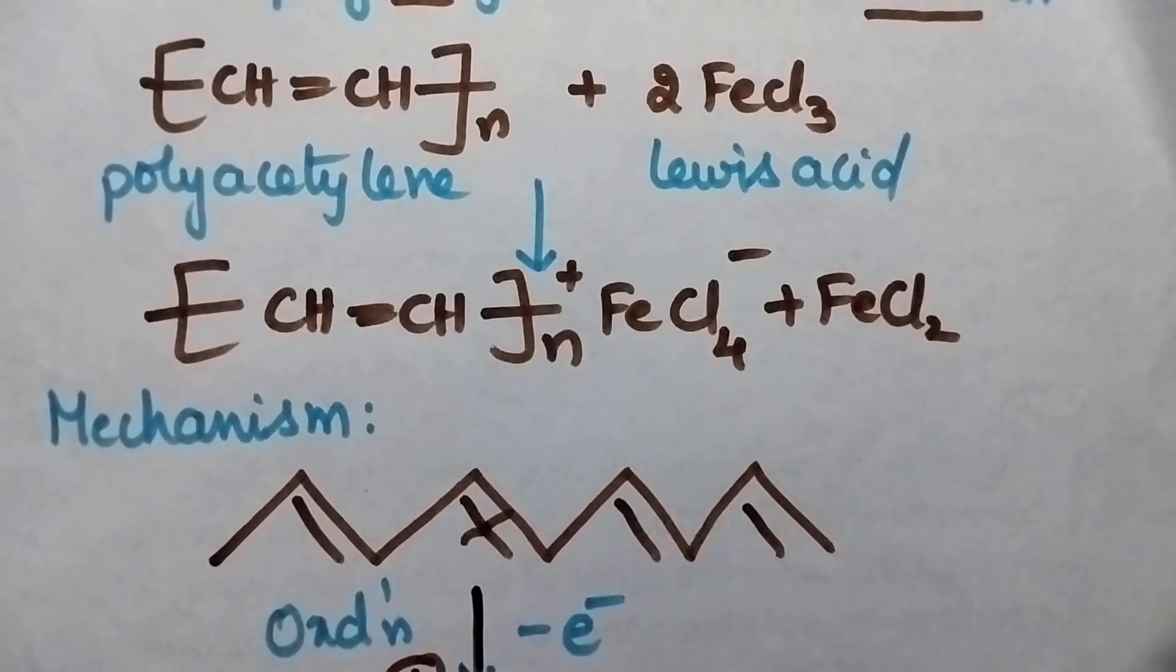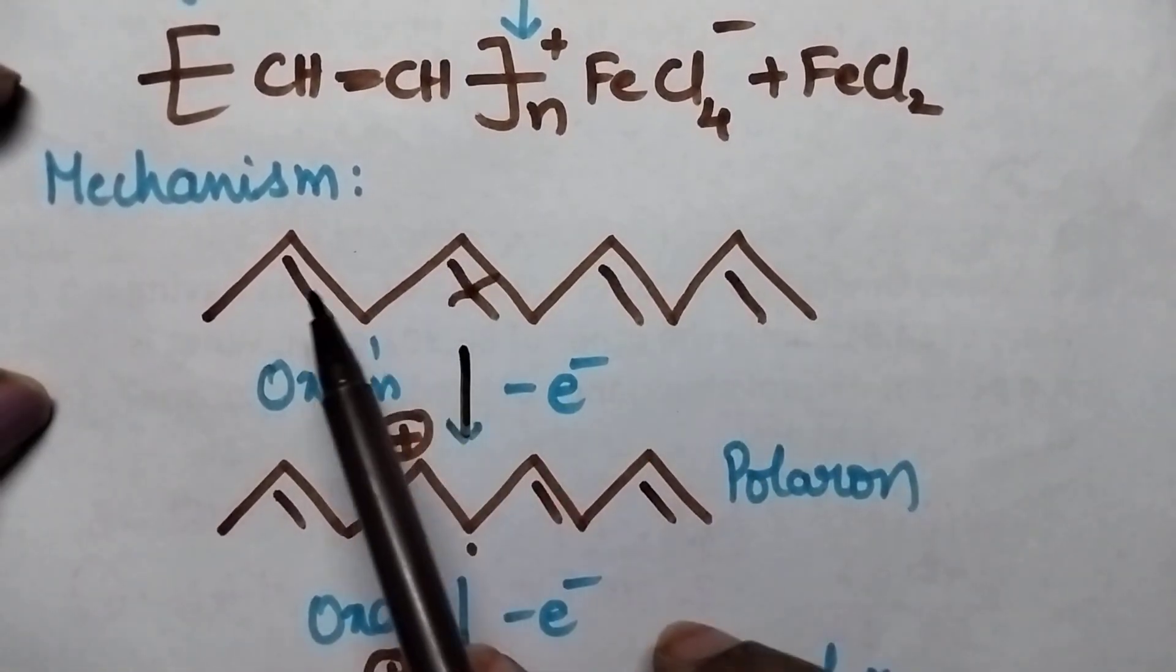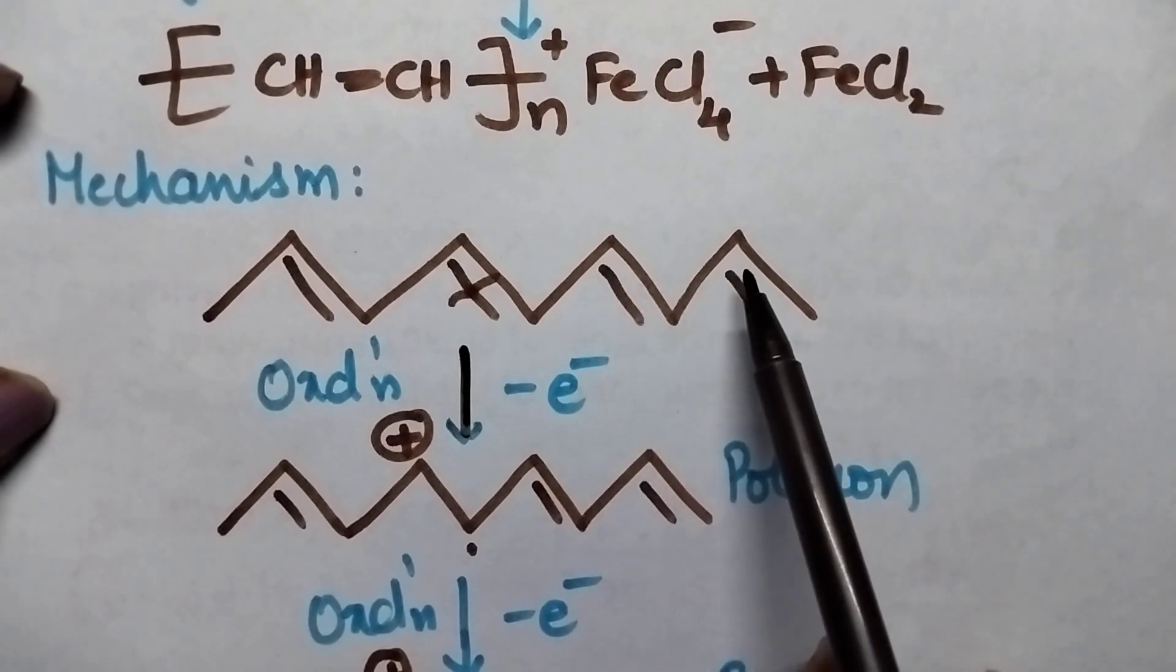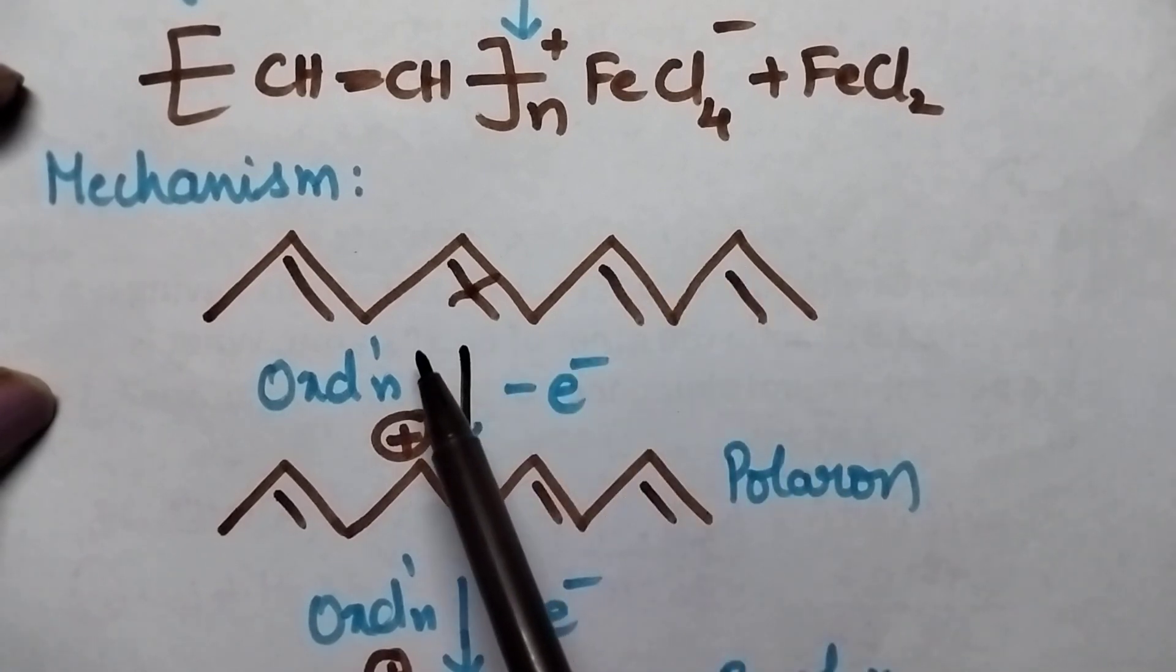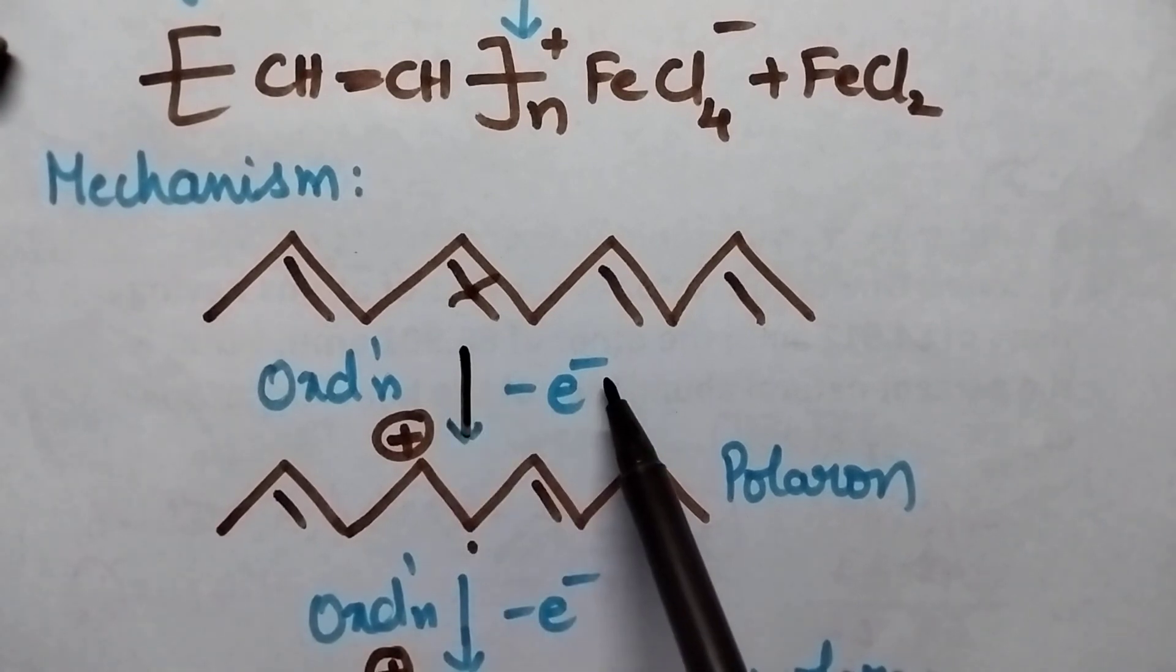Coming to the mechanism of doping, whenever we consider polyacetylene, it consists of alternating double bonds. Here in the first step, it undergoes oxidation. Oxidation means removal of electron.